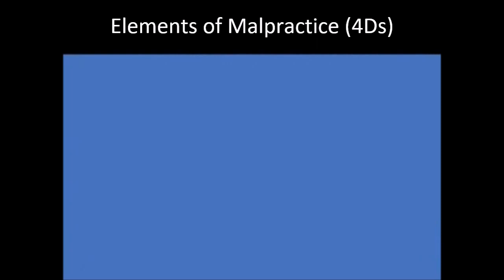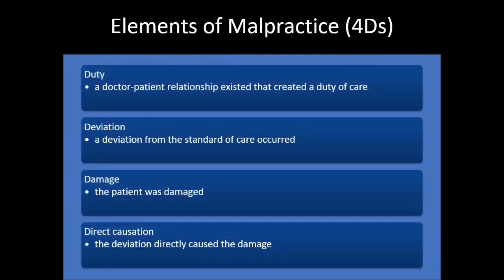When we talk about malpractice, there are four Ds that you have to remember. If one of those four Ds is not present, then malpractice cannot be established. Those four Ds are: duty, deviation, damage, and direct causation. First, there should be a doctor-patient relationship that exists to create a duty of care. Next, there should be a deviation from the standard of care. Then, there was damage that happened to the patient. And lastly, that damage was directly caused by your deviation.